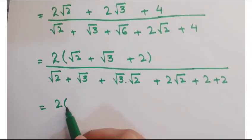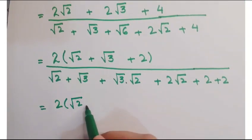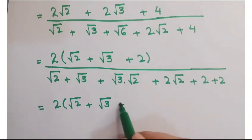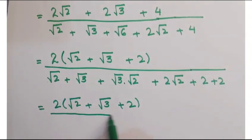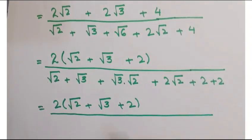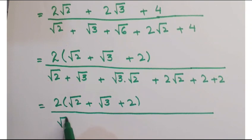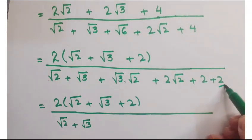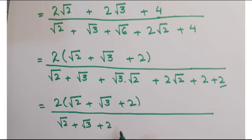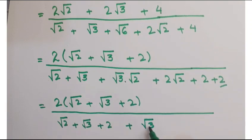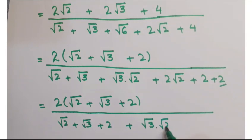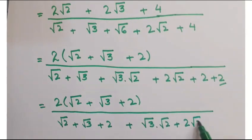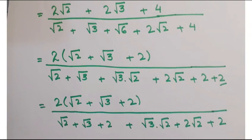Now rearrange the terms of the denominator, copying the numerator as it is. So you get: (√2 + √3) + √3·√2 + 2√2 + 2 in the denominator.